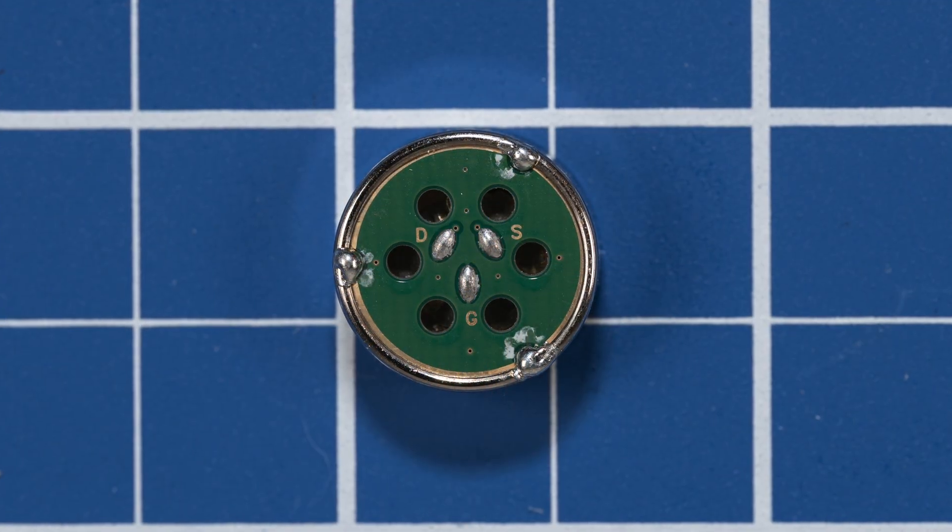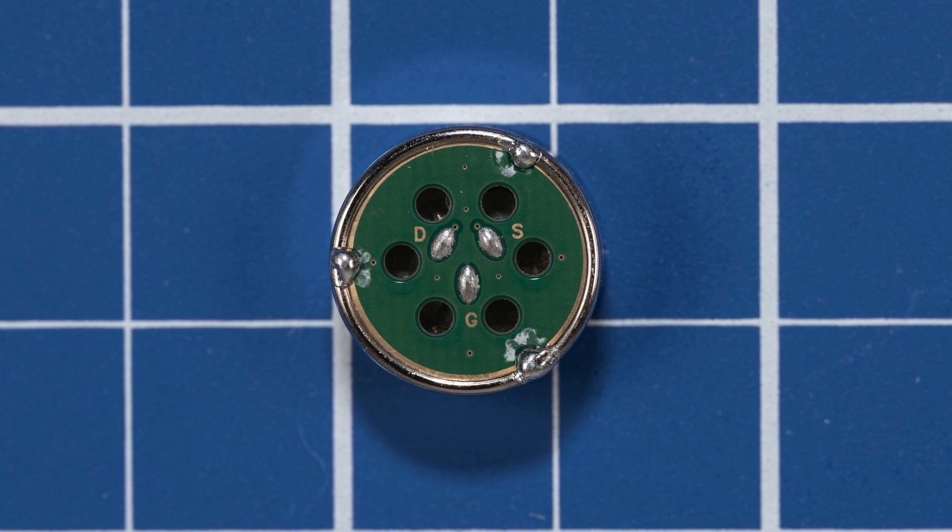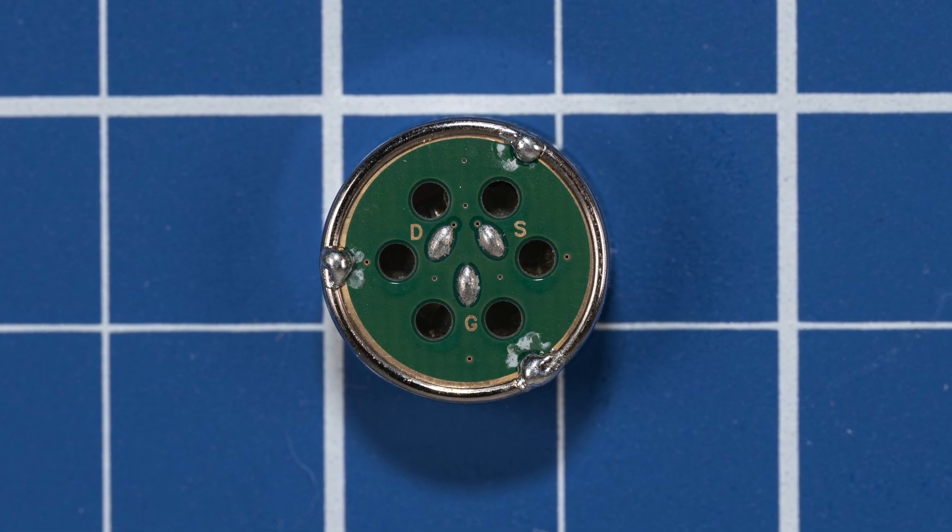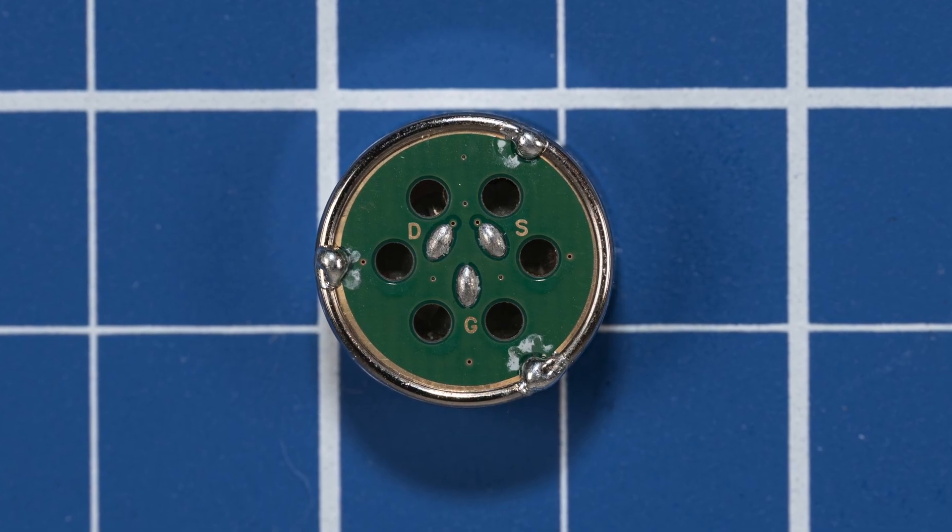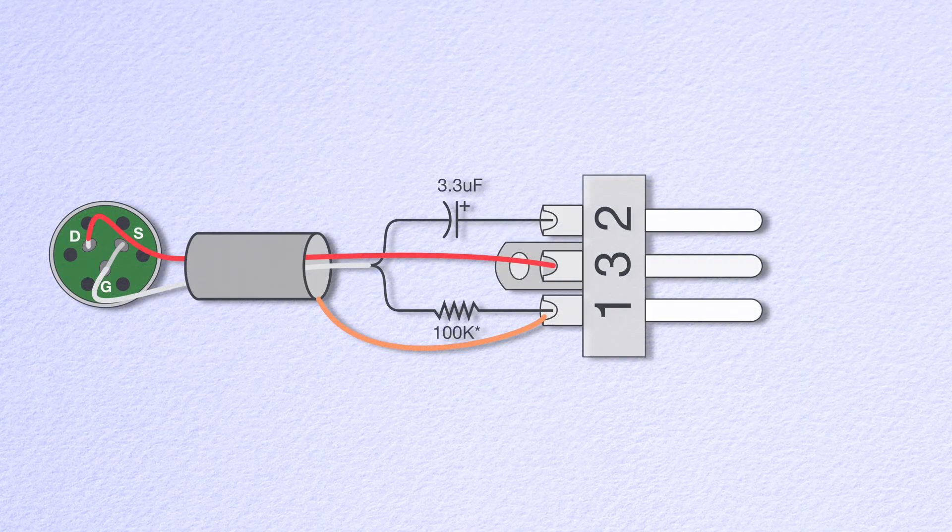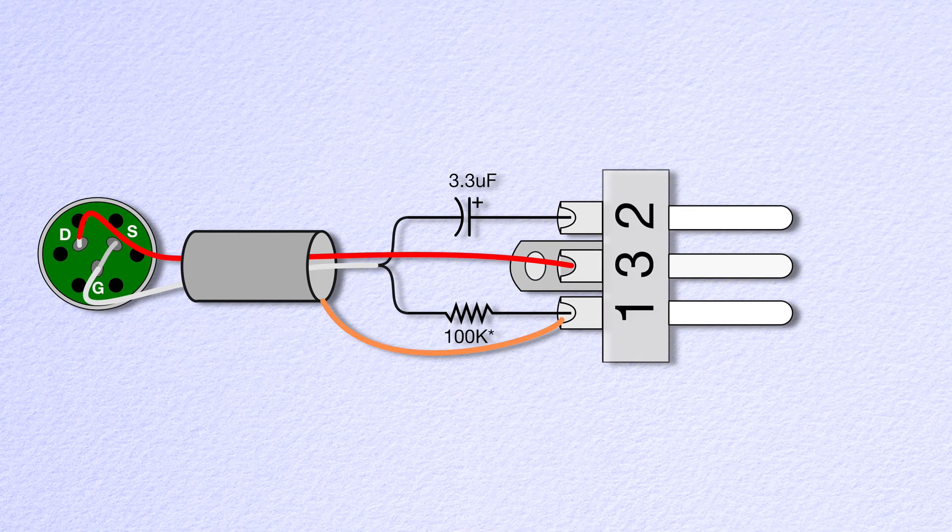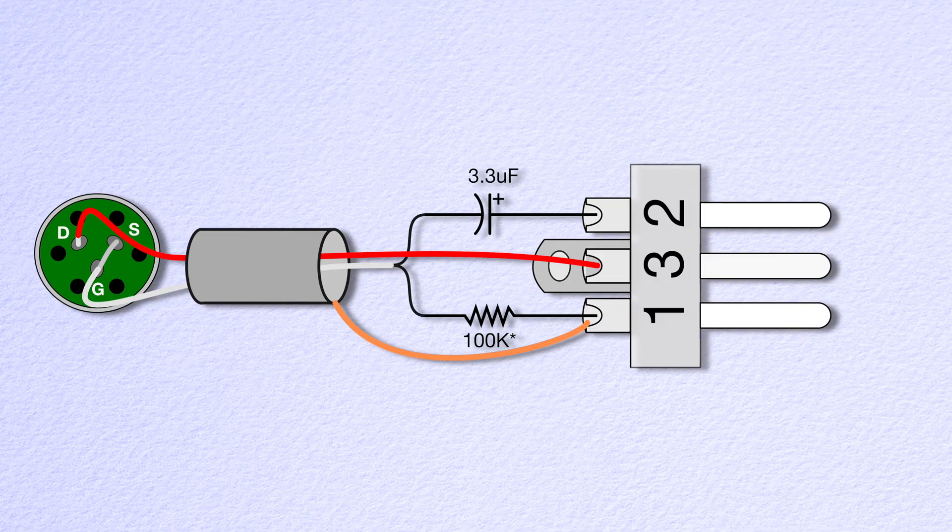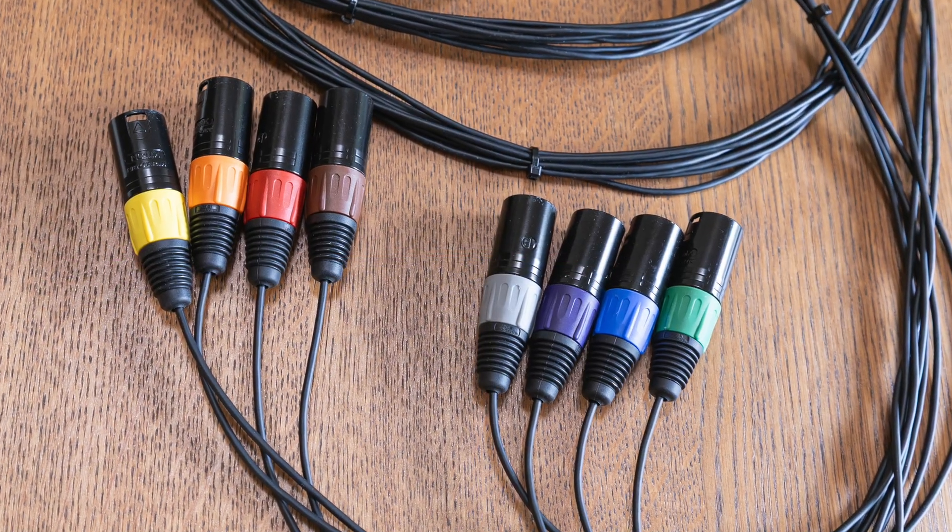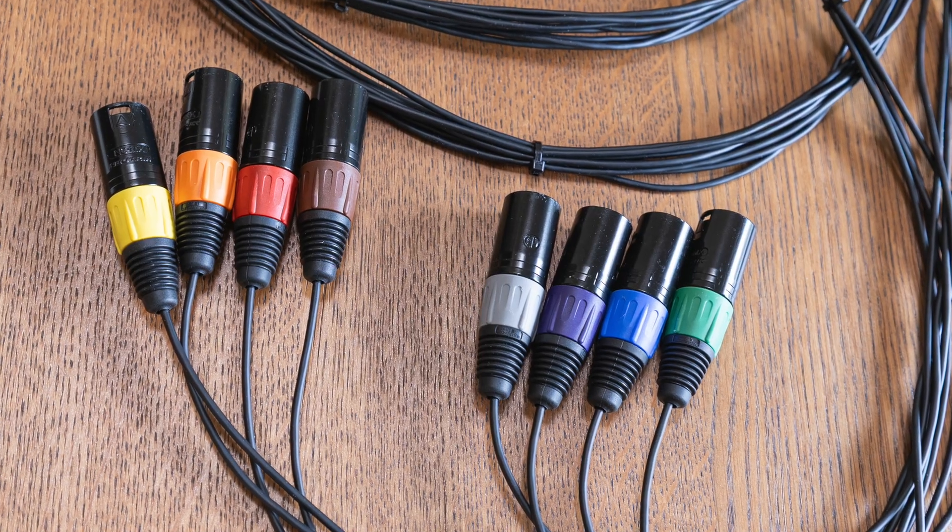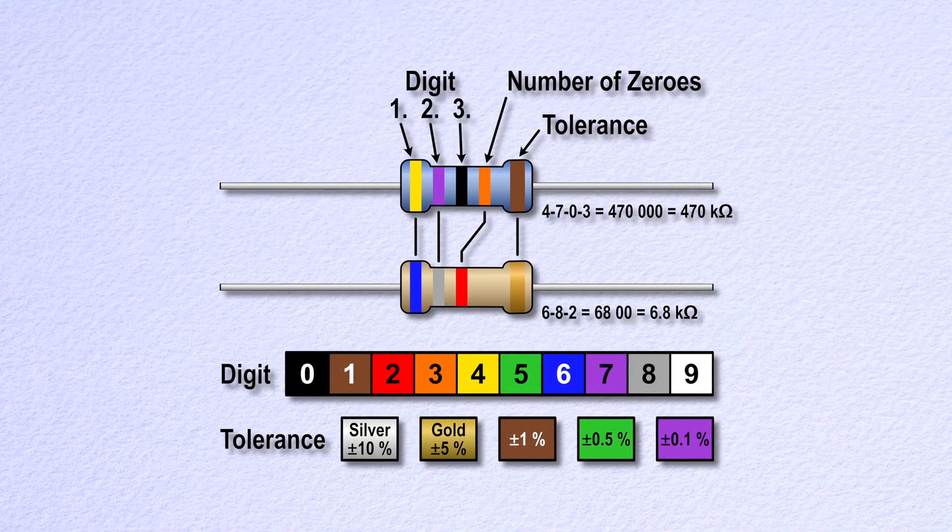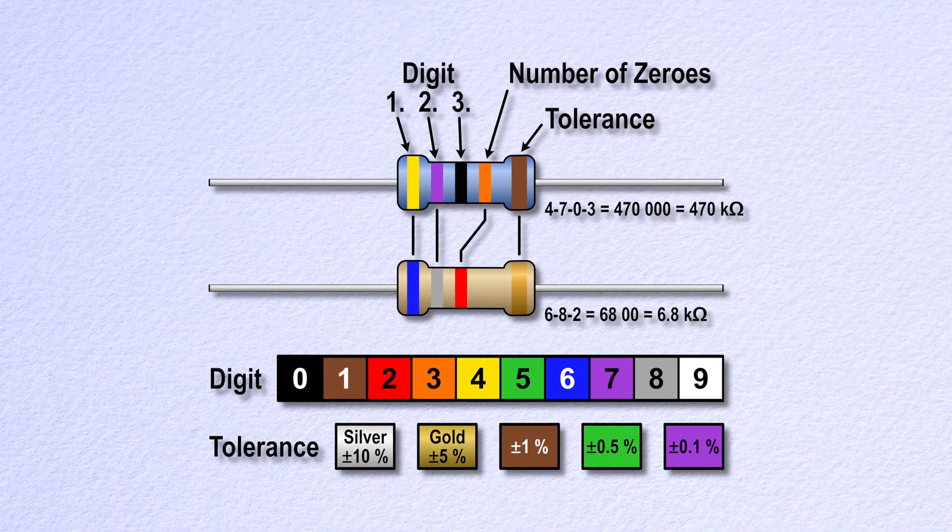Let's start with the microphones. These use 16 millimeter cardioid capsules from JLI Electronics. The capsule has a built-in FET or field effect transistor. We're wiring each capsule to an XLR connector using something called the Simple P48 circuit. The Simple P48 uses two components for the entire circuit.